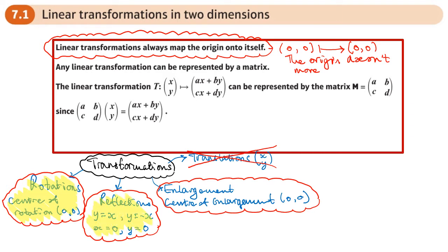The transformations in the yellow boxes are linear transformations — the origin won't move anywhere. The second thing is, in a linear transformation, when we represent it as a matrix, you won't see squared or cubed or any powers. You will just see something linear.